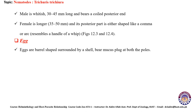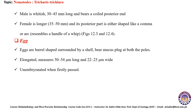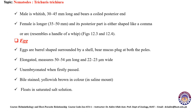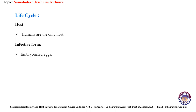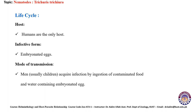Eggs are barrel-shaped, surrounded by a shell with a mucus plug at both poles, elongated, measuring 50–55 micrometers in length and 20–23 micrometers in width. They are unembryonated when first passed, with a mild strain, and yellowish-brown in color. Life cycle — hosts: humans are the only host. The infective form is embryonated eggs. Mode of transmission: humans, usually children, acquire infection by ingestion of contaminated food and water containing embryonated eggs of Trichuris trichura.